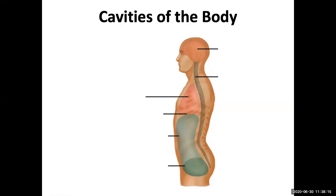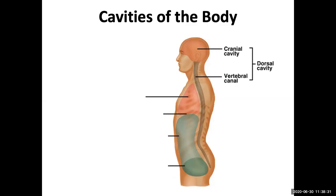We've gone through and looked at the ways which we can reference orientation-wise. Now let's take a look at how we can localize distinct areas of the body. We'll start with the cavities of the body. In the cavities of the body, we can look at it in terms of the dorsal side. The dorsal cavity is made up of the cranial cavity and the vertebral canal or vertebral cavity.